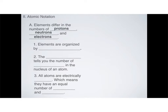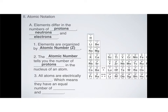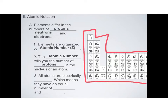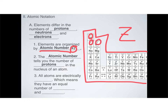Elements differ in the number of protons, neutrons, and electrons. Because they differ in the number of protons, neutrons, and electrons, there has to be a way of organizing them. If you take a look at a periodic table, like the one over here in the corner, you'll see that elements are organized by atomic number. Atomic number is abbreviated as a capital letter Z. You can see very prominent atomic numbers on this periodic table: hydrogen's atomic number is 1, lithium's is 3, beryllium is 4, sodium is 11, magnesium is 12, etc.